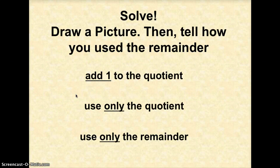So first of all, you solve it, draw a picture, then tell how you're going to use the remainder. You could either add one to the quotient, use only the quotient, or use only the remainder. Those are the three different things that could happen with the remainder. Remember, the quotient is the answer to a division problem.